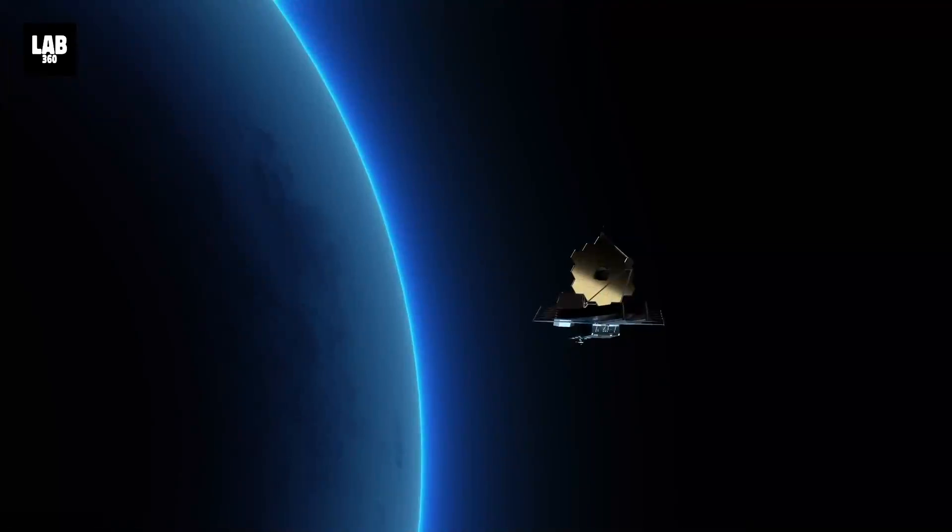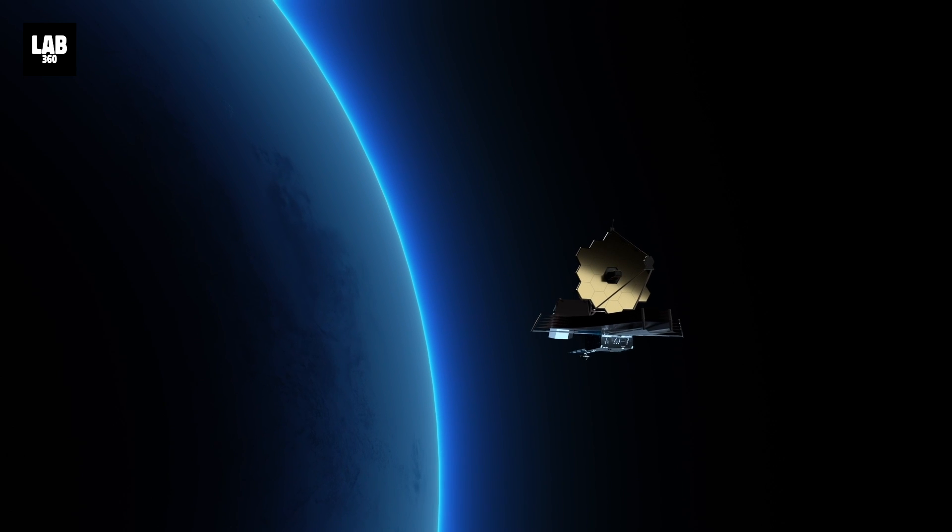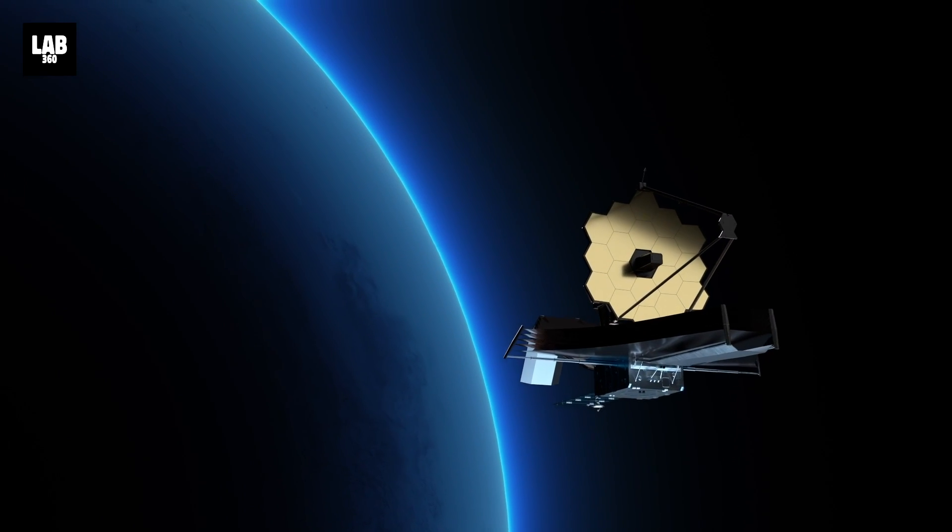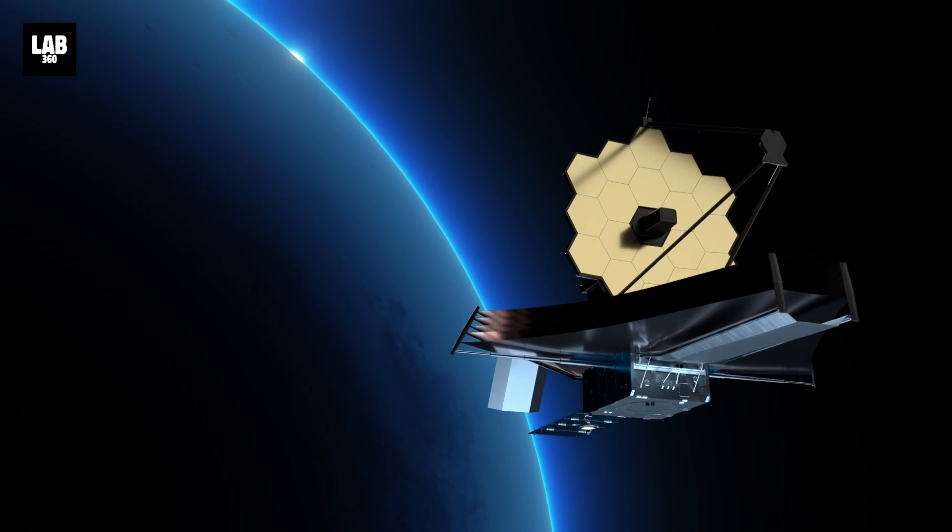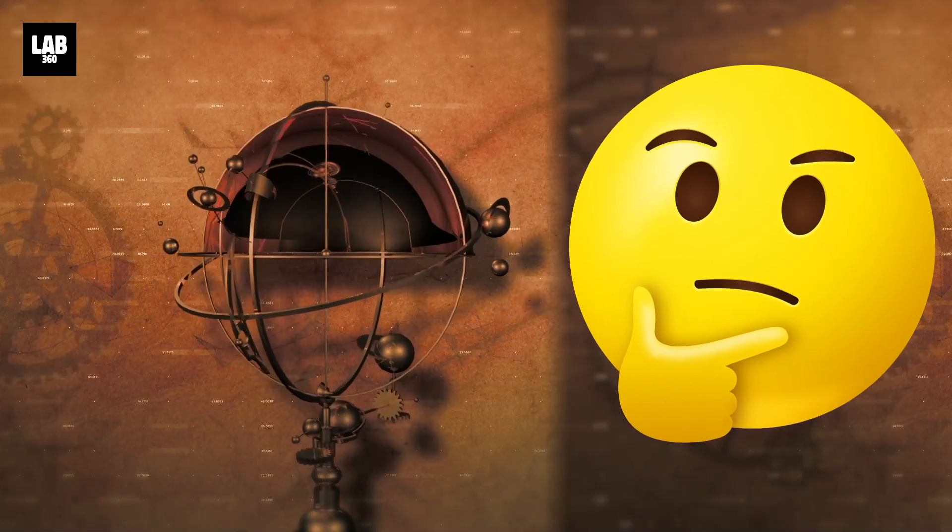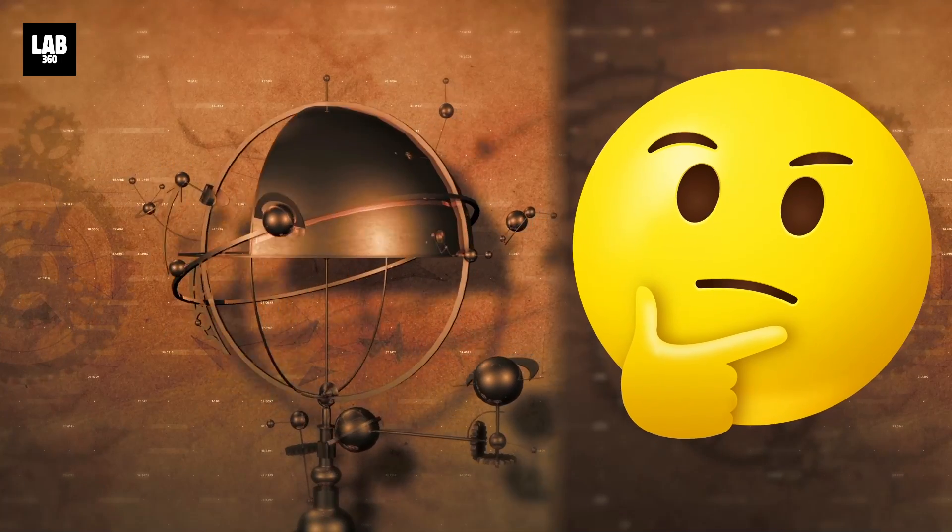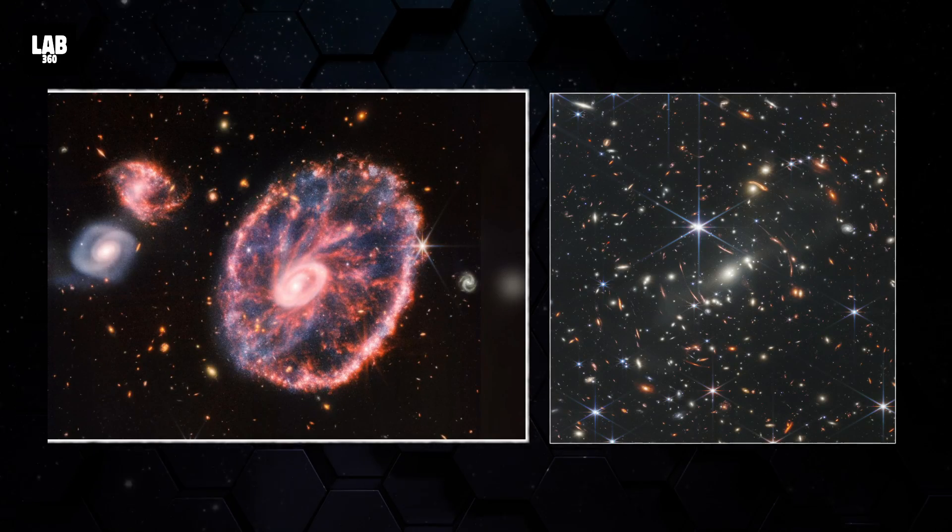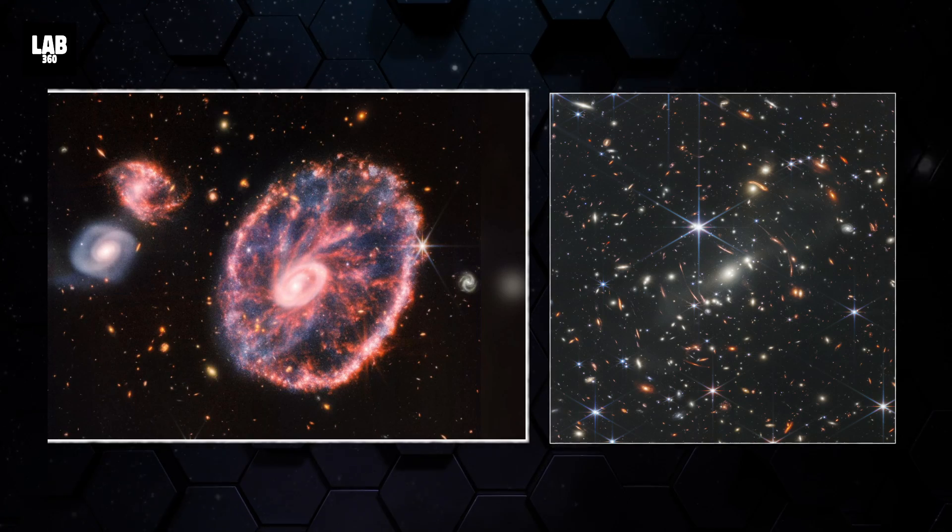With every new discovery, James Webb has been finding loopholes in our understanding of the universe. But this discovery of James Webb's took the cake. One that is making cosmologists and astronomers question everything they've ever known about our universe. James Webb's recent discovery just proved that the universe is twice the estimated age.